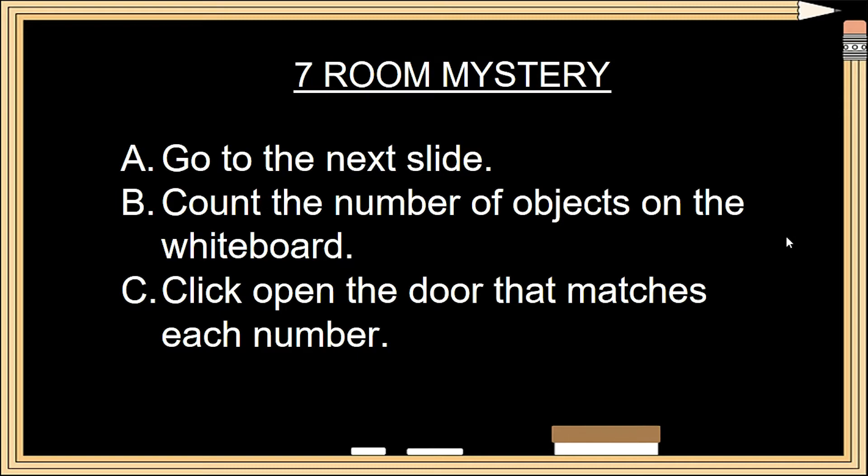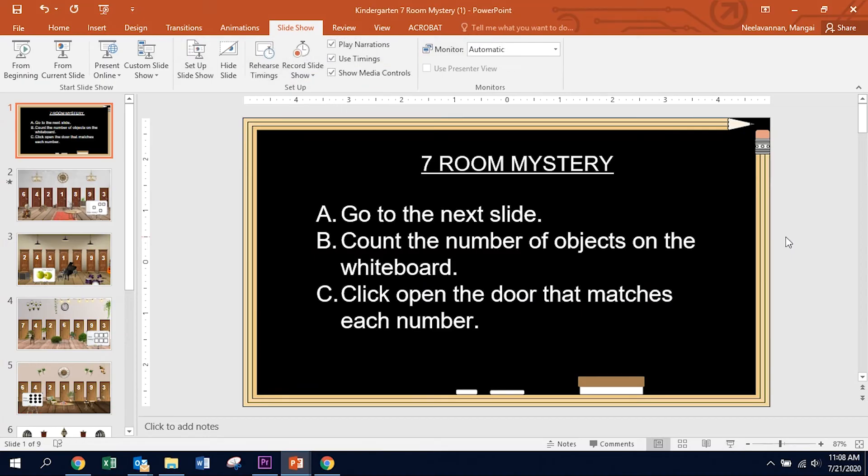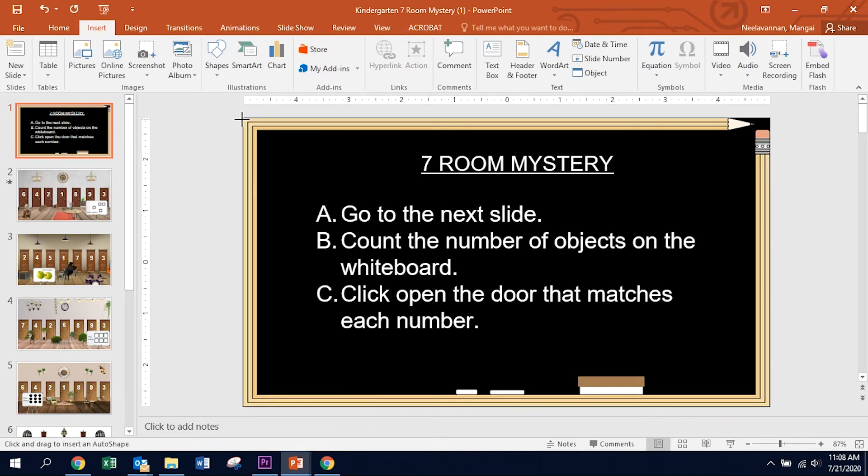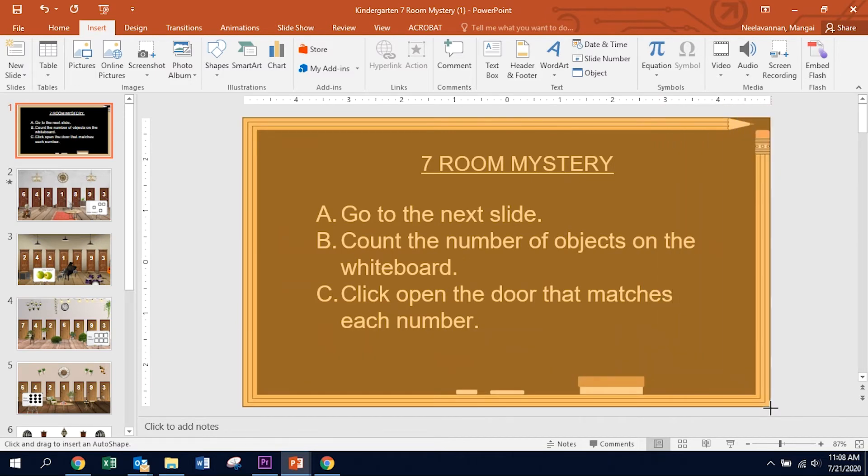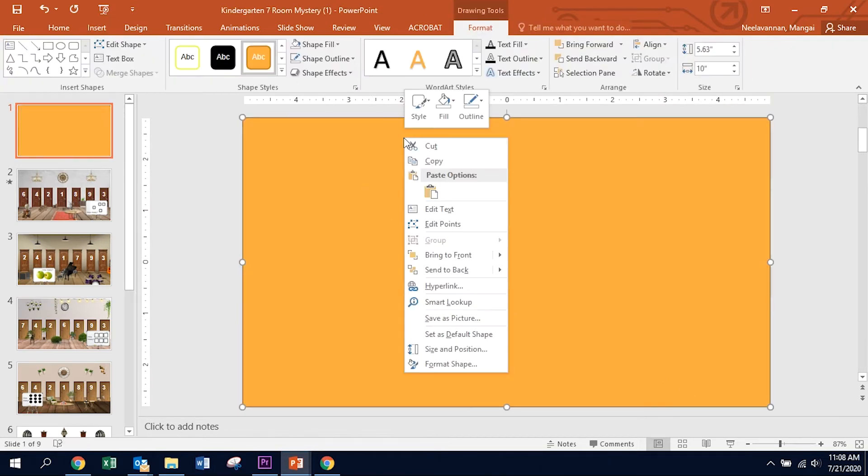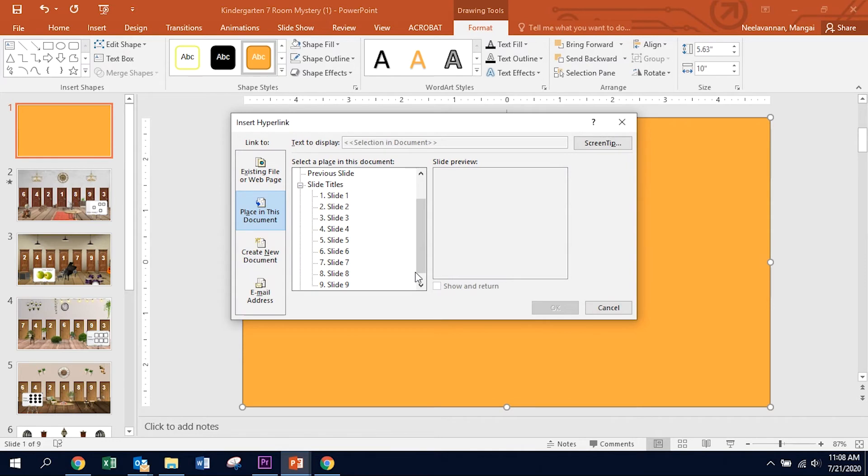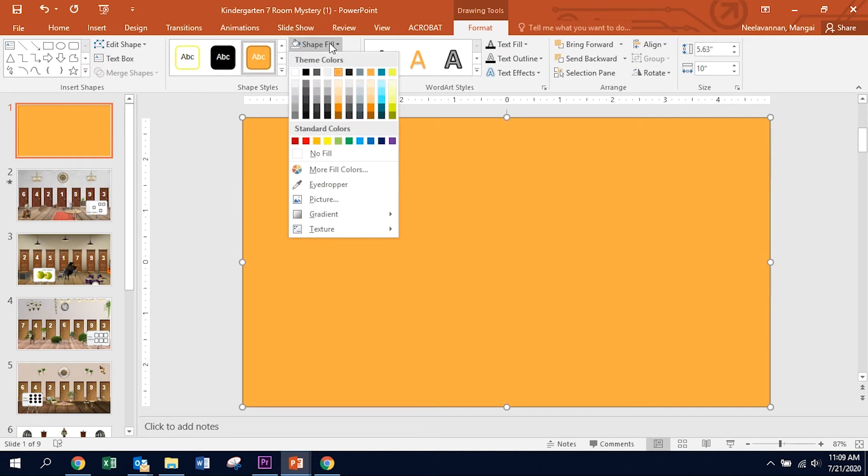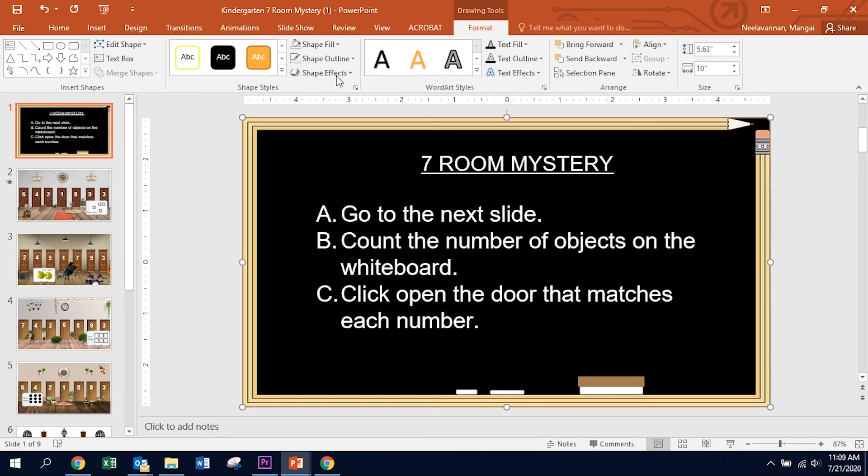So the first thing you want to do is go into Insert, Shape, Rectangle. Select the entire slide and right-click, Hyperlink. Point it to slide number 2. Now, Shape Fill, select No Fill. Shape Outline, select No Outline.